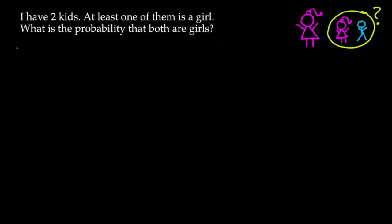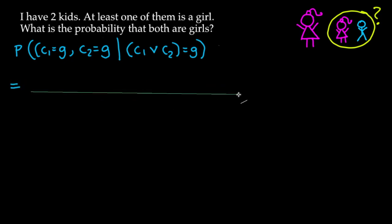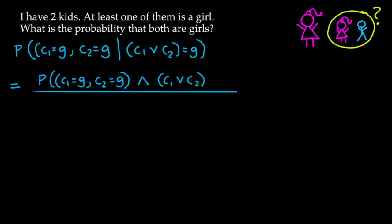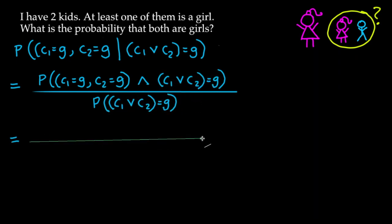Using conditional probability rules, in set notation the problem asks: P(C1 is a girl and C2 is a girl | C1 or C2 is a girl). Using the formula, we rewrite this as P(C1 is a girl and C2 is a girl, and C1 or C2 is a girl) divided by P(C1 or C2 is a girl). The numerator simplifies to just the probability that both children are girls, which is 1/2 × 1/2. The denominator is the probability that child one or child two is a girl.